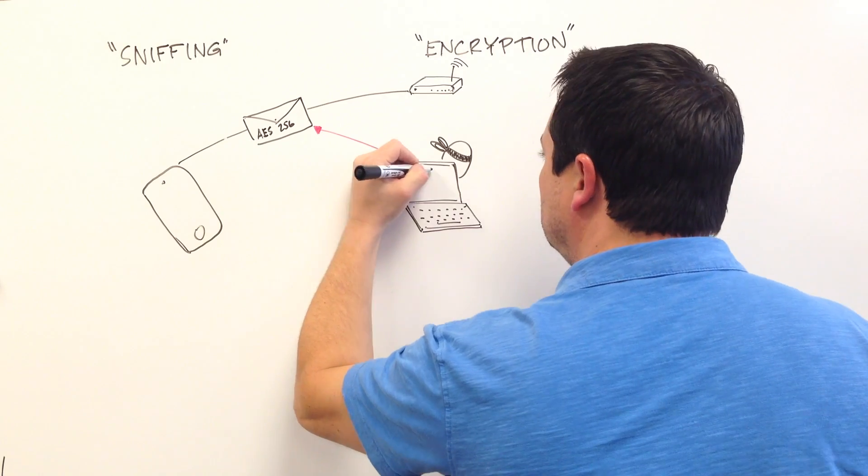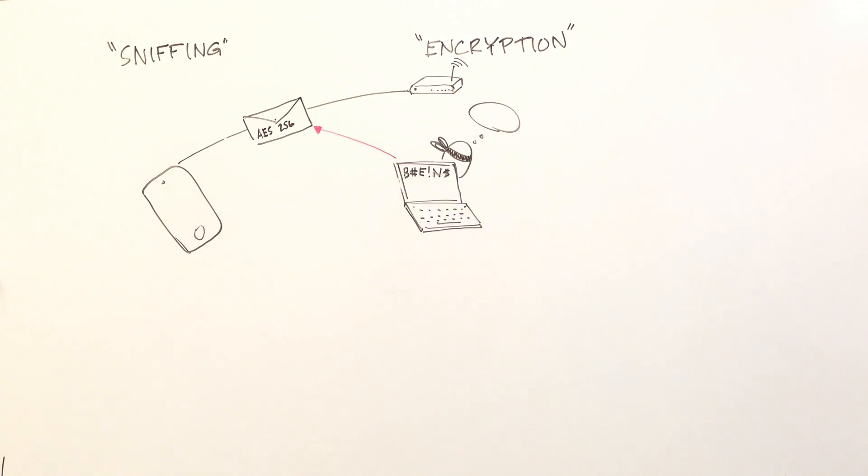Even if the attacker knows the algorithm used, he will still not be able to decrypt the message without the key. The attacker can't be stopped from sniffing the data, but he can be prevented from reading the data that he sniffed.